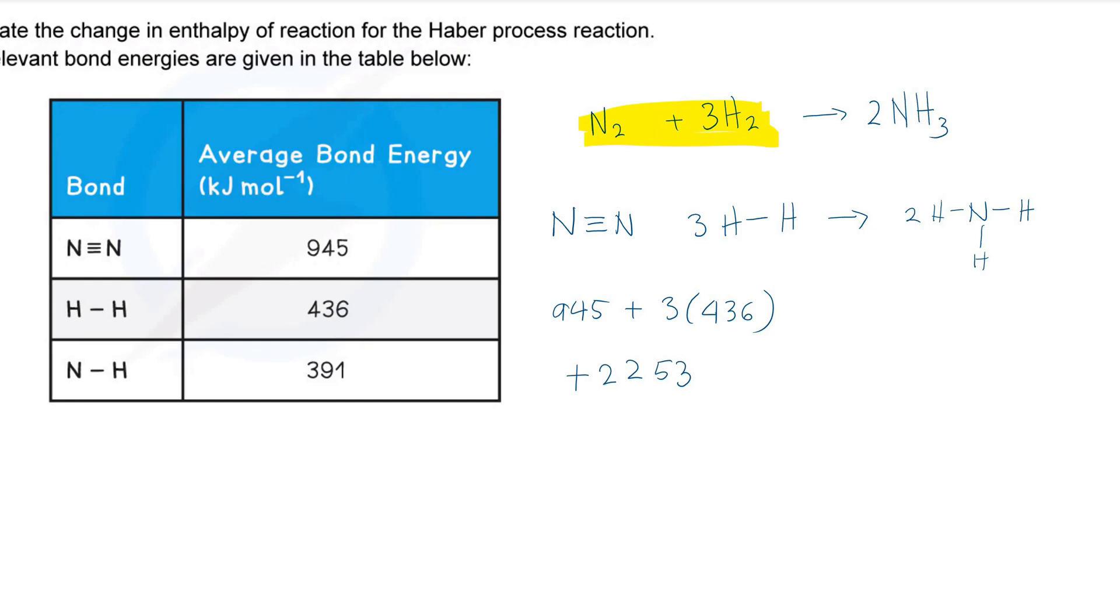On the product side, we have a total of six nitrogen-hydrogen bonds, which means six times 391. And that gives us a total of 2346. And we keep the sign negative because bond forming is exothermic. Energy is being released.